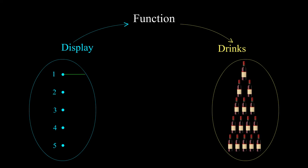You can understand it clearly if you look at the set diagram. Here you can see number 1 is mapped with 1 drink, that means if you press 1 then 1 drink will come out. Number 2 is mapped with 2 drinks, that means if you press 2 then 2 drinks will come out, and so on.